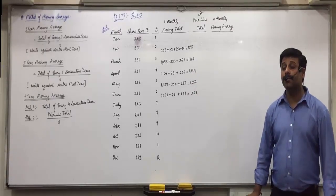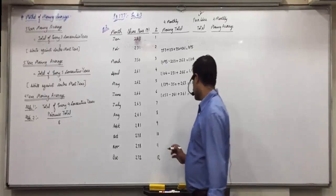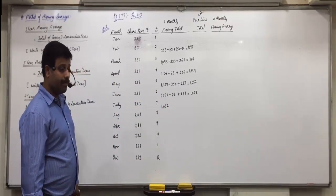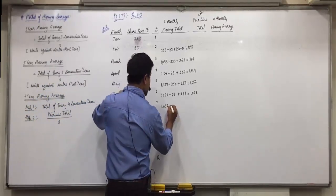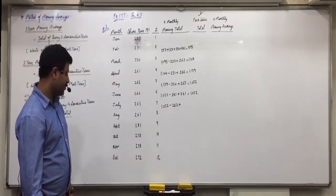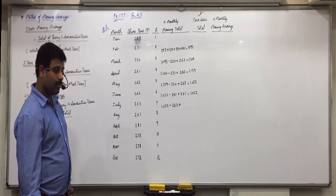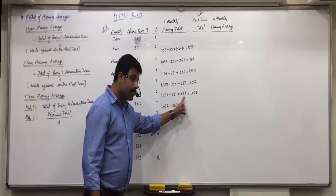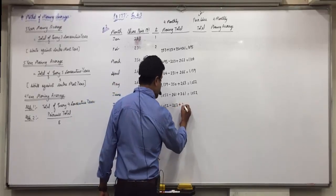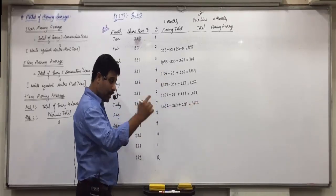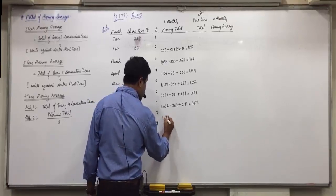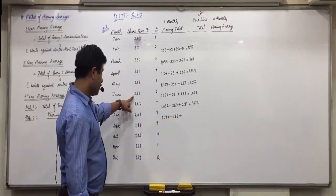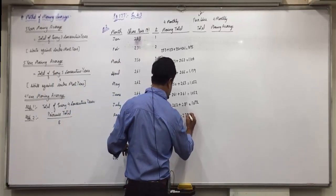Now the next: 1052 minus 262, after 261, plus 281, gives 1072. Then 1072 minus 266 after 262, plus 270 after 281 — is it 1084? Let me check: 1083.